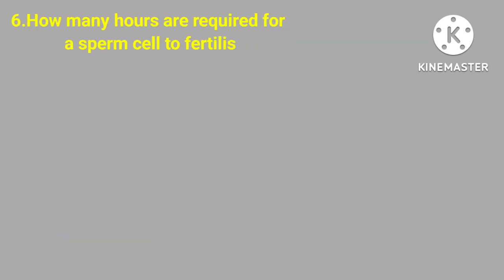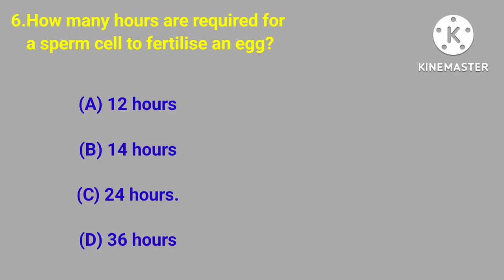Question number six. How many hours are required for a sperm cell to fertilize an egg? Twelve hours, fourteen hours, twenty-four hours, thirty-six hours. Correct answer is twenty-four hours.